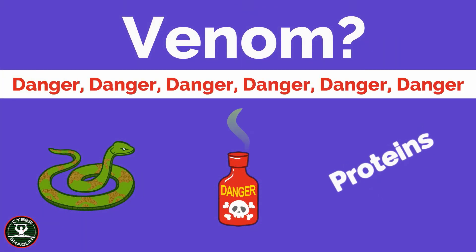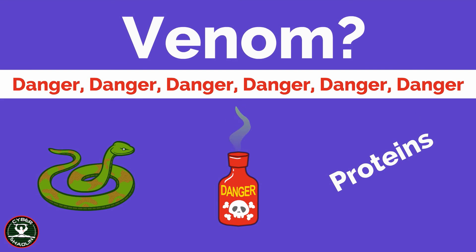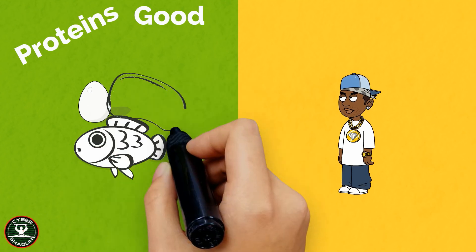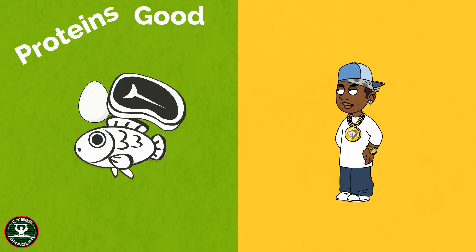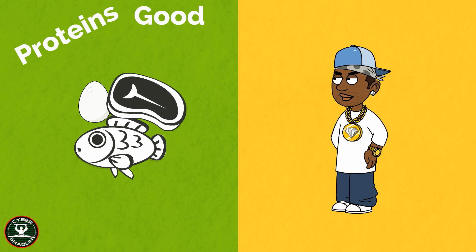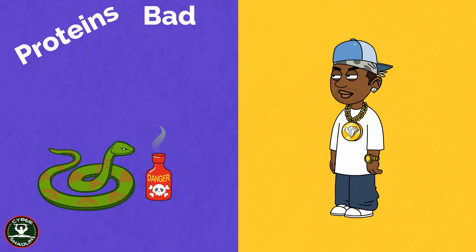Snake venom is mainly made up of proteins. And so when you are bitten by a venomous snake, the snake injects highly concentrated proteins into your body. This venom commands the body to shut down and it can cause some serious damage, including death. Proteins are good for you if taken in the right amount and concentration. However, if the amount of protein in your body is more than what it can handle, then we have a problem.